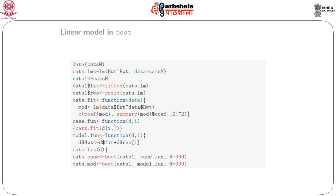It starts with the data catsm, which is basically heights and weights of cats. After defining cats.fit, we define a case.func, which does the repeated sampling and is function of d and i, where it takes cats.fit(d, i). Similarly, we have a model.func for resampling the residuals, which is function of d and i, where d$height equals d$fit plus d$residual[i]. That means it is resampling the residuals and then adding them to the fitted values, and the output is cats.fit(d). Now we have two functions: case.func and model.func, and then we use the boot command.